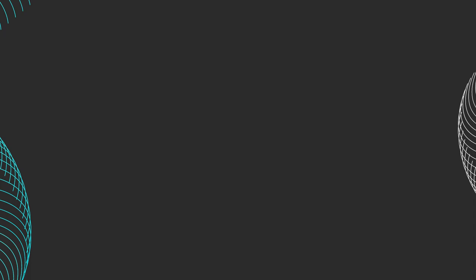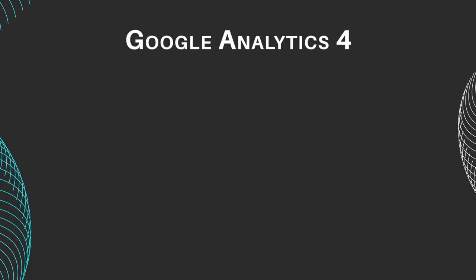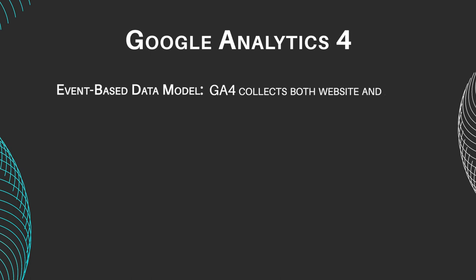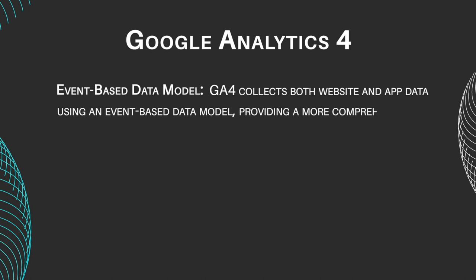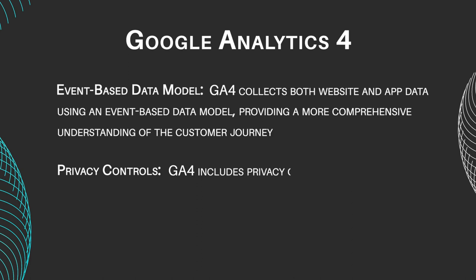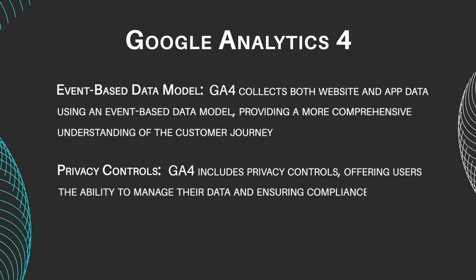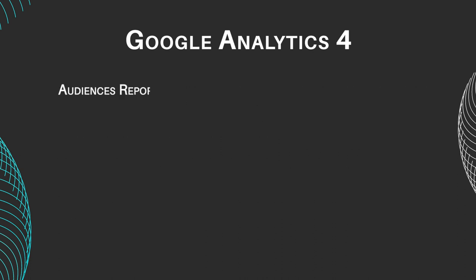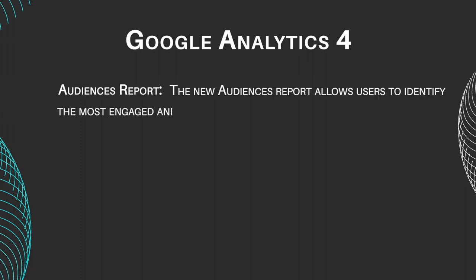Let's take a look at how the programs' key features stack up against each other. Google Analytics 4 features include an event-based data model — GA4 collects both website and app data using an event-based data model, providing a more comprehensive understanding of the customer journey. Privacy controls: GA4 includes privacy controls, offering users the ability to manage their data and ensuring compliance with privacy regulations. The new Audiences report allows users to identify the most engaged and profitable audiences, aiding in targeted marketing efforts.